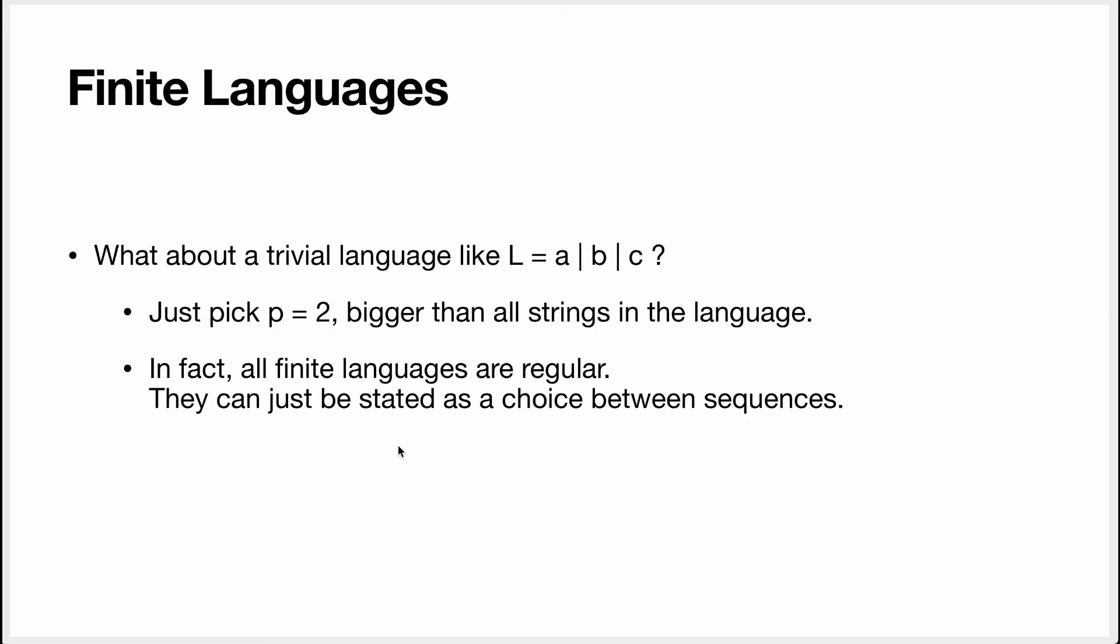In fact, all finite languages are regular, and the way you can show that is that they can just be expressed as a choice between sequences of characters or tokens. You can just literally write the grammar as an enumeration of every possible valid sentence, and that's a regular grammar.